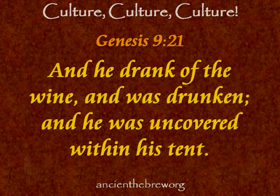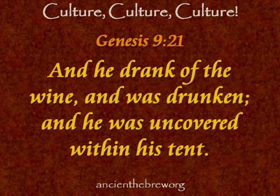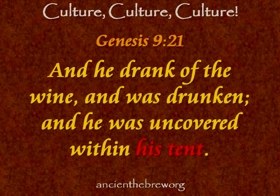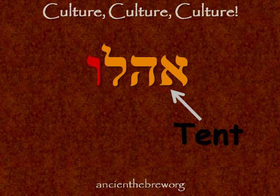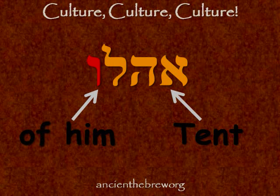Let's take a look at another verse: Genesis 9, verse 21. 'And he drank' — he, by the way, happens to be Noah — 'and he drank of the wine and was drunken, and he was uncovered within his tent.' Let's look at how you would write 'his tent' in Hebrew. This is the Hebrew word Oheloh, composed of the word Ohel, meaning tent, and then the suffix Oh, meaning 'of him' — or as we would say in English, 'his tent.'